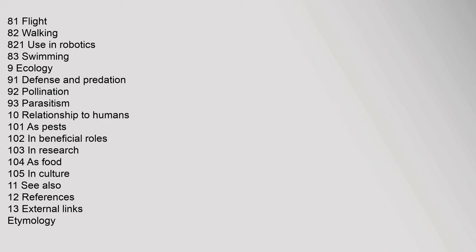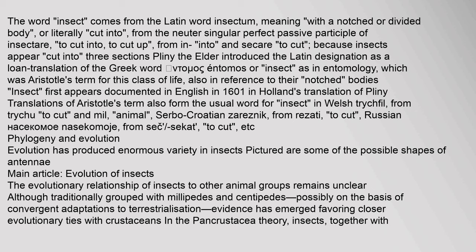The word 'insect' comes from the Latin word insectum, meaning 'with a notched or divided body,' or literally 'cut into,' from the neuter singular perfect passive participle of insectare, meaning 'to cut into' or 'to cut up,' because insects appear cut into three sections. Pliny the Elder introduced the Latin designation as a lone translation of the Greek word entomos, which was Aristotle's term for this class of life, also in reference to their notched bodies. The word 'insect' first appears documented in English in 1601 in Holland's translation of Pliny.